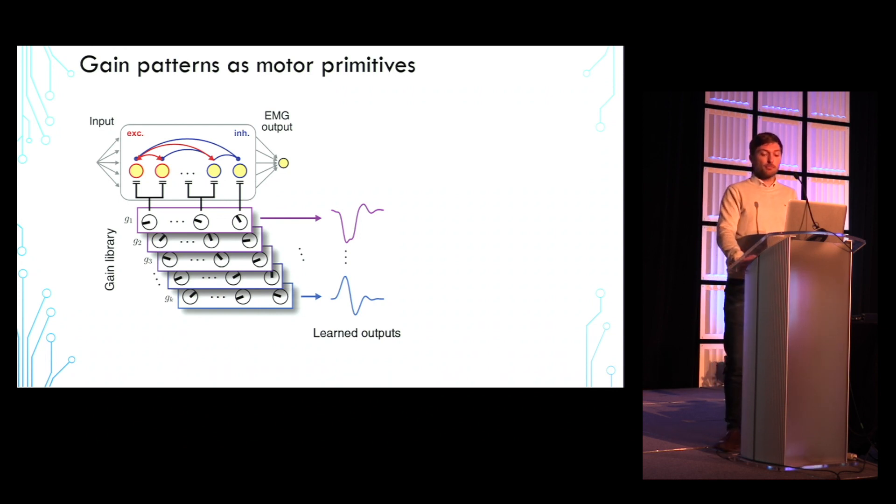To test if this is possible in our model, we first approximate a novel target movement, which is shown here in gray, as a linear combination of existing movements using a least squares fit.